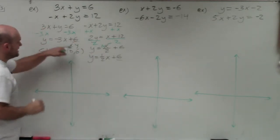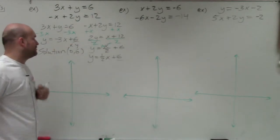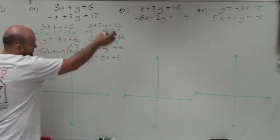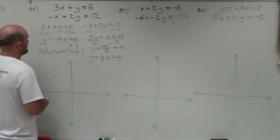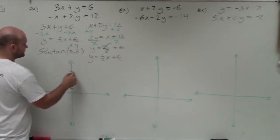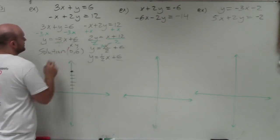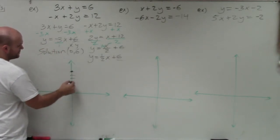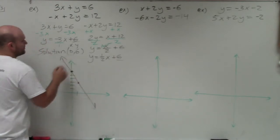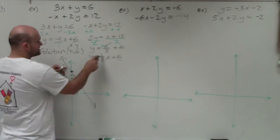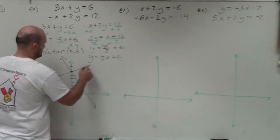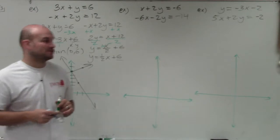If you plug 0 in for x and 6 in for y in both equations, it would make them true. Let's go ahead and graph these anyway. For the first line, I go up to y-intercept 6, rewrite the slope as negative 3 over 1, go down 3 and to the right 1, and connect the points. For the second line, I still have y-intercept 6, and my slope is 1 half, so I go up 1 and over 2. And you can see they intersect at (0, 6).